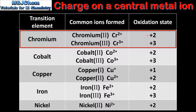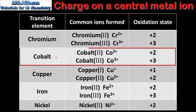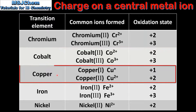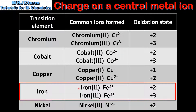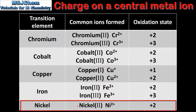The oxidation states or oxidation numbers are +2 and +3 respectively. Next is cobalt, which can form the cobalt 2 ion with a 2+ charge and the cobalt 3 ion with a 3+ charge, with oxidation states of +2 and +3. Next is copper, which can form the copper 1 and copper 2 ions, with charges of 1+ and 2+ and oxidation states of +1 and +2. Next is iron, which can form the iron 2 ion with a 2+ charge and the iron 3 ion with a 3+ charge, with oxidation states of +2 and +3. Finally, nickel forms the nickel 2 ion with a 2+ charge and an oxidation state of +2.